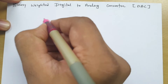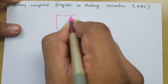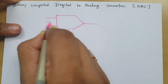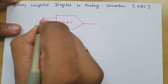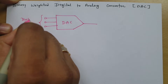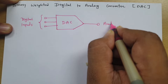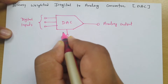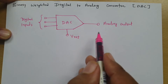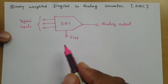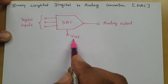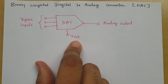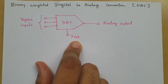When we talk about a digital-to-analog converter, it has digital inputs and an analog output. Digital inputs are connected on one side and analog output is obtained on the other side. Along with this, the digital-to-analog converter requires a reference voltage. In some ICs this reference voltage is internally generated, but in most ICs you will have to supply this reference voltage externally. Understanding this reference voltage is important and will be covered in the parameters section.